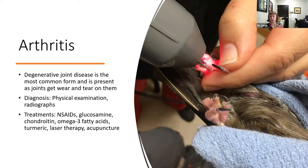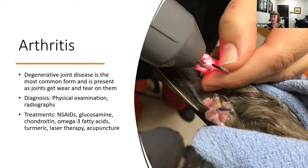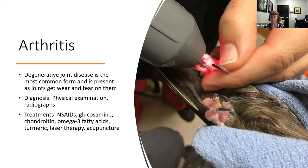I may add NSAIDs back in depending on the individual. Turmeric is another option that helps reduce inflammation. Laser therapy and acupuncture are also helpful — I'm not acupuncture-trained myself but I refer patients to colleagues who are, and I've used it for my own pets. All these treatments are really geared toward reducing inflammation, which is the core problem in arthritis.